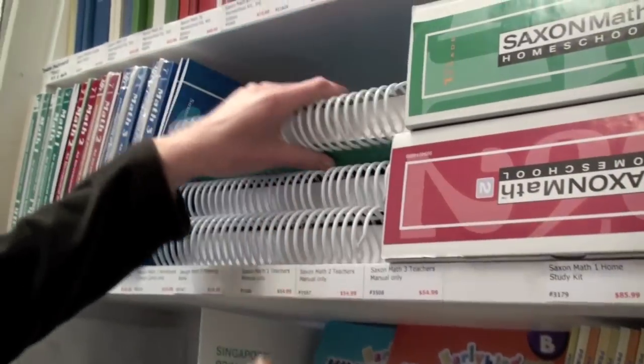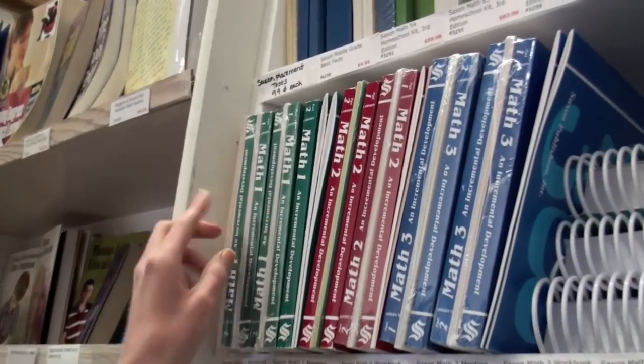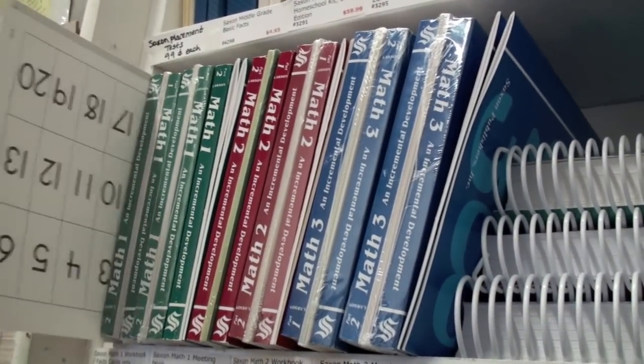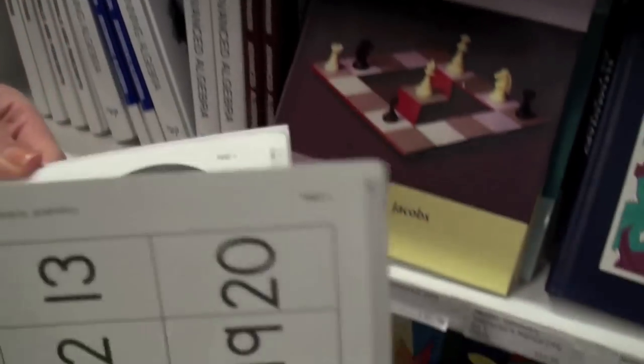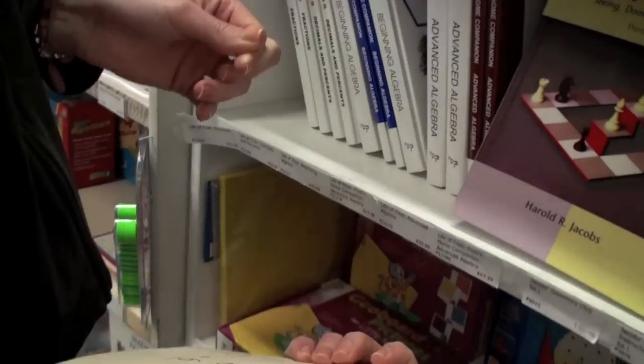It also comes with two workbooks, part one and part two, and fact cards. The fact cards are just flash cards that you practice with your student. Here you can see them, math facts, different things you're learning.